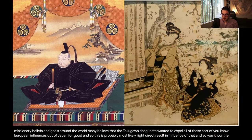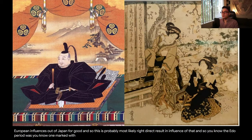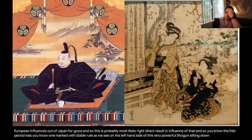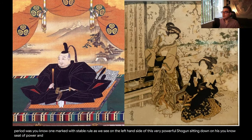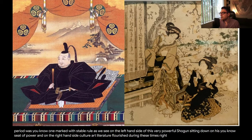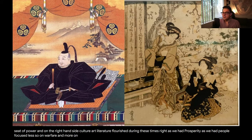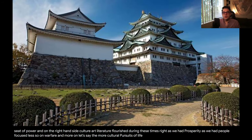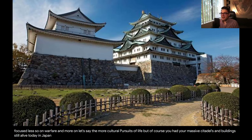Historians talk amongst themselves about why Japan wanted to close up and get rid of foreign influence. Many believe that because the Portuguese and Spanish were sailing around the world, starting trading posts and spreading their missionary beliefs, the Tokugawa Shogunate wanted to expel all European influences out of Japan for good. The Edo period was marked with stable rule — as we see in this image of a very powerful Shogun sitting on his seat of power. On the right-hand side, culture, art, and literature flourished during these times as people focused less on warfare and more on cultural pursuits. Of course, you had massive citadels and buildings still alive today in Japan, available for viewing if you ever go there as a tourist.